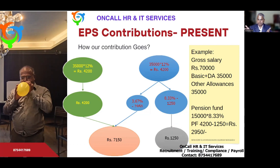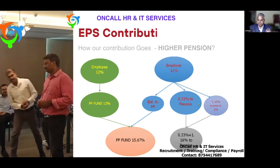So in the present scenario, employer contribution: 8.33% subject to the statutory ceiling goes to pension, and balance goes to PF. In this example, put together ₹7,150 goes to the PF account. That is the current situation. Now, as per the circular dated 3rd May 2023, this is how it will be revised.